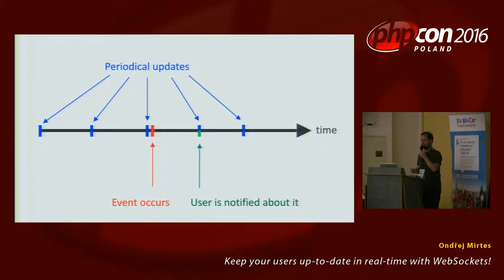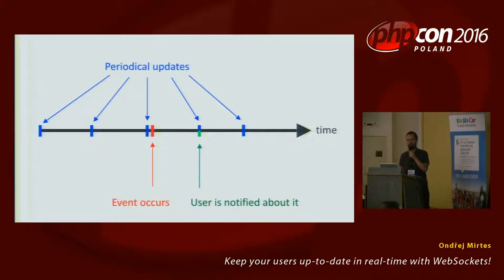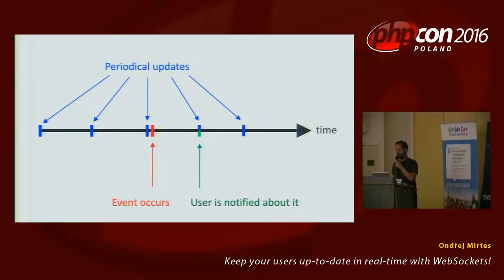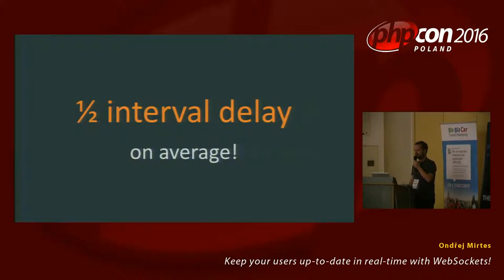This approach is called polling and it means periodical updates. It's the same thing that, for example, your email client uses when it checks for new emails. So you don't know about the thing right away but you have to wait until the next check request, which introduces a delay of half of the interval on average. So the user waits an unnecessarily long time to see the update — half of the interval on average.